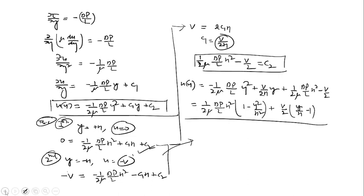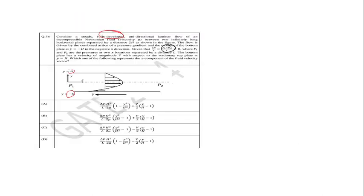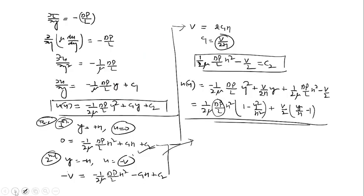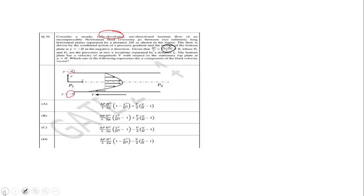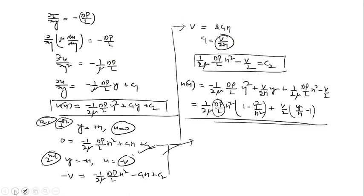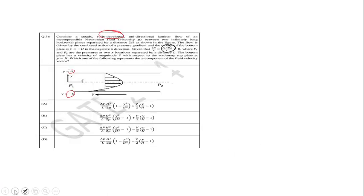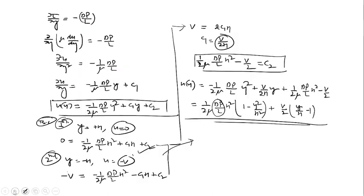So the final velocity profile is: u(y) equals delta_p times h squared over 2mu times l times (1 minus y squared over h squared) plus v over 2 times (y over h minus 1), where delta_p over l is a positive value. Option A is the correct answer. Thank you.